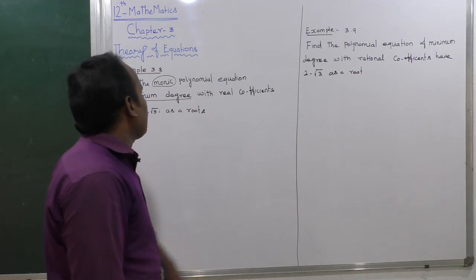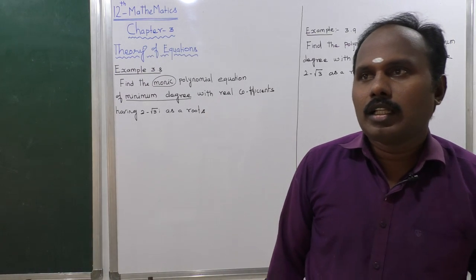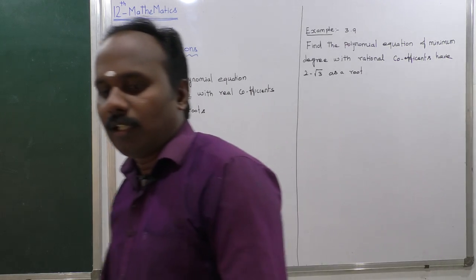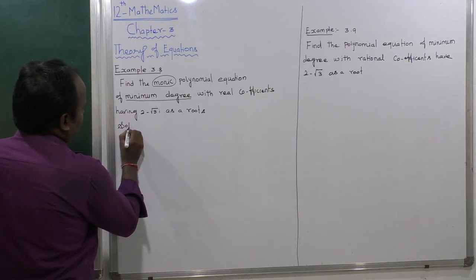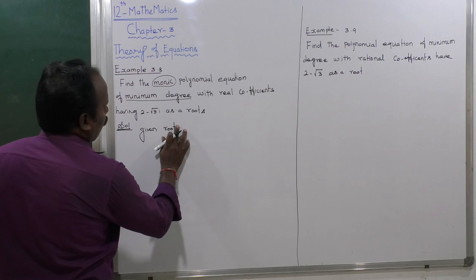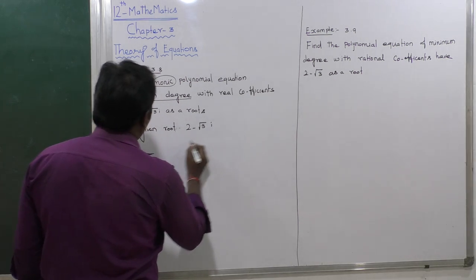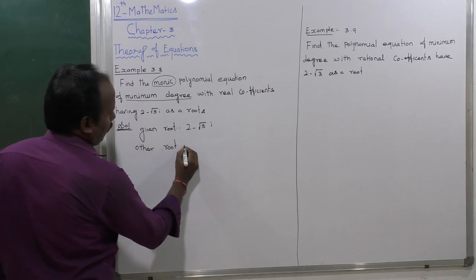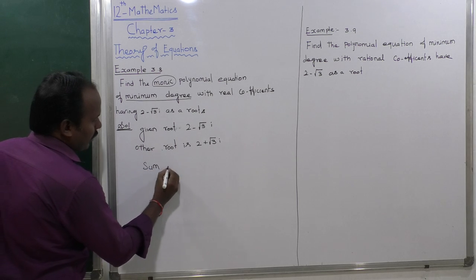The given number is a complex number: 2 minus root 3 i. Since complex roots come in conjugate pairs, the conjugate root of this number is 2 plus root 3 i. So the other root is 2 plus root 3 i. We will now find the sum of the roots and the product of the roots.